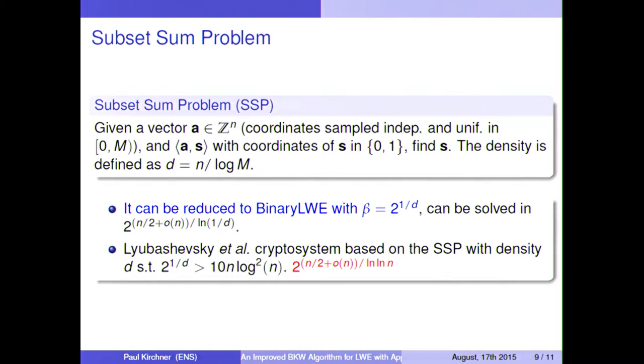But if the dimension is not too small, then it's more efficient to reduce it to binary LWE with beta which is 2 to the 1 over d. And so therefore, using the previous algorithm, you can solve it in sub-exponential time for small d. And one cryptosystem was based on the subset sum problem, and the density they used was 1 over log n. So this gives a fast algorithm for this problem.